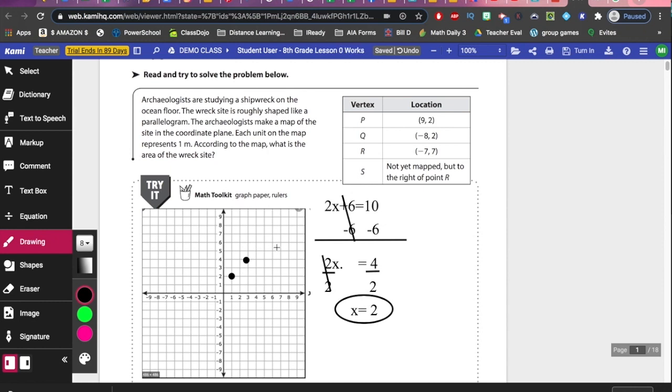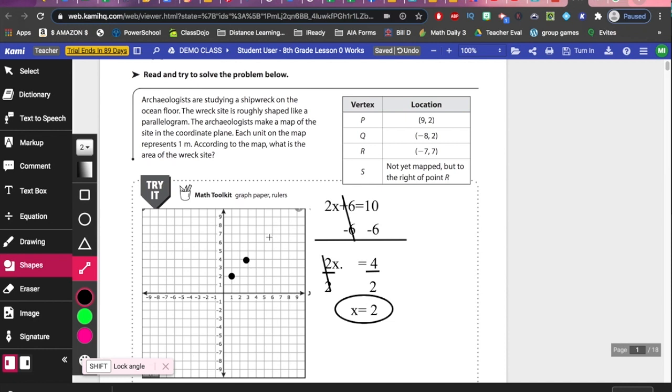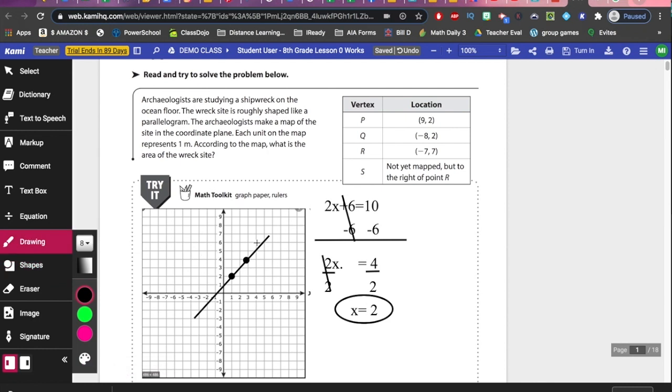You can graph points very easily. Take your shapes tool, get a line and voila, you've graphed your equation. If you want to put arrows on the end, you can always include those. Obviously, it wouldn't be that thick. But you get my drift.